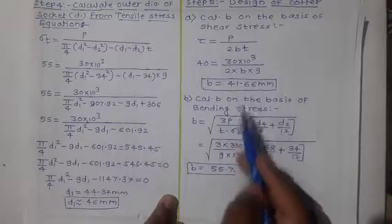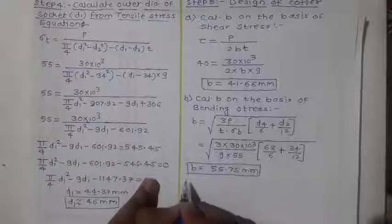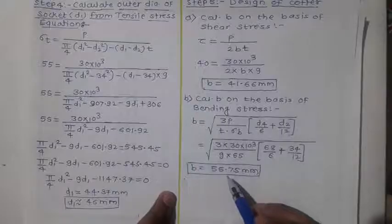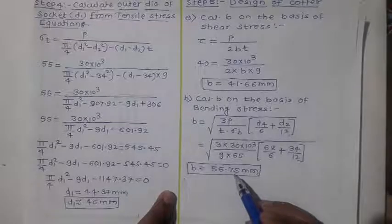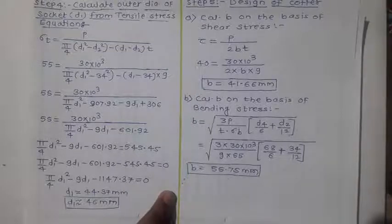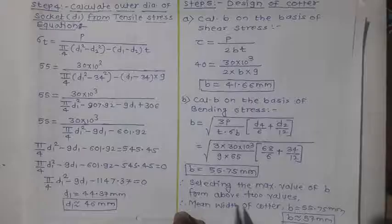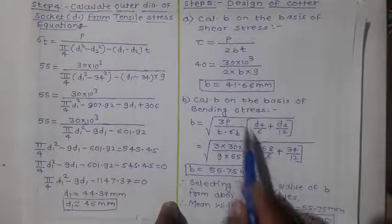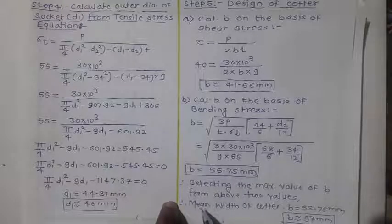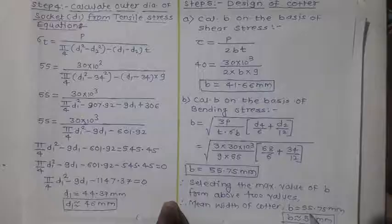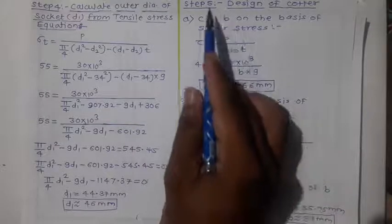Comparing the two values — 41.66 mm from shear stress and 55.75 mm from bending stress — we select the maximum value. Therefore the mean width of the cotter is b = 55.75 mm, rounded up to b = 57 mm. This completes step number five.